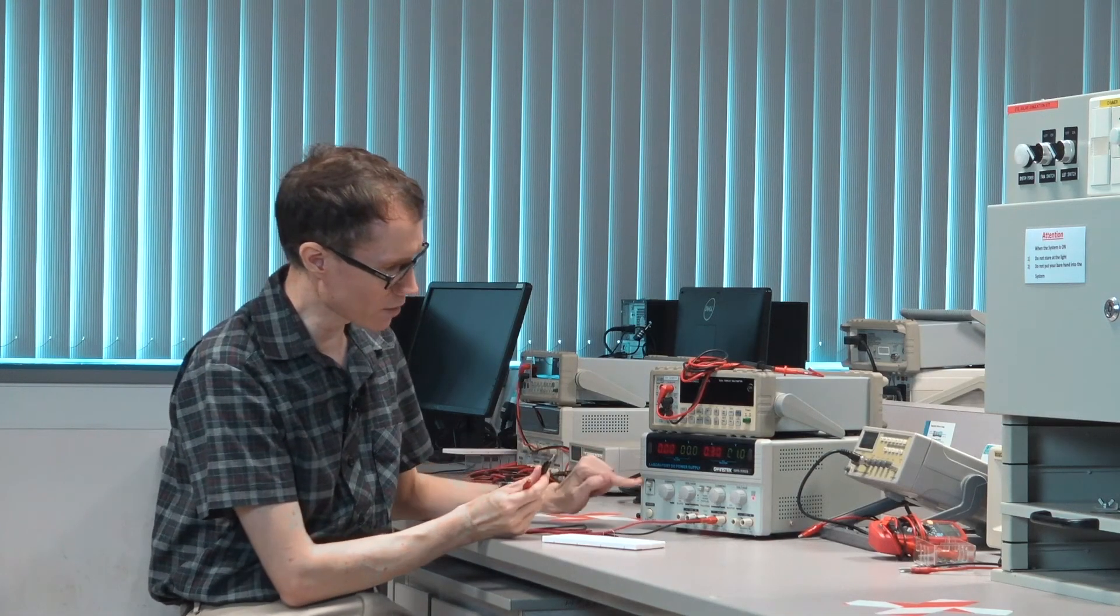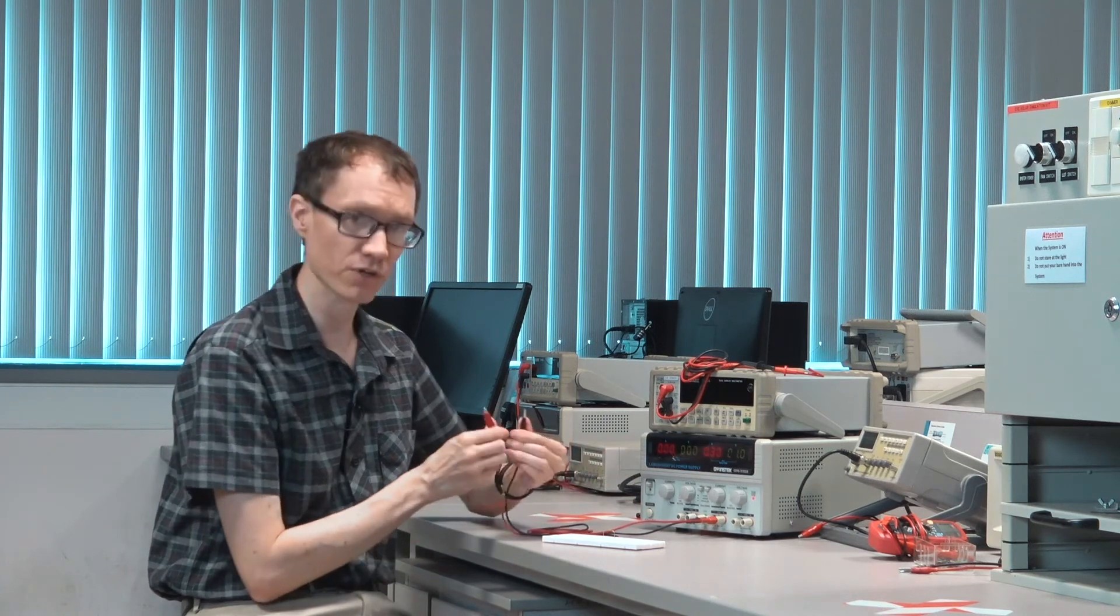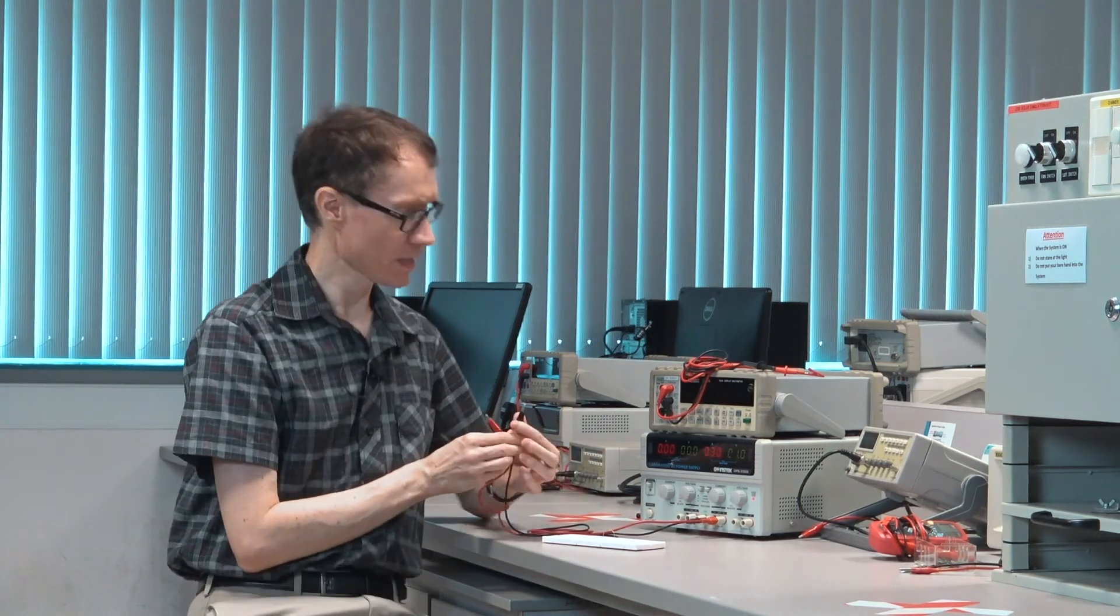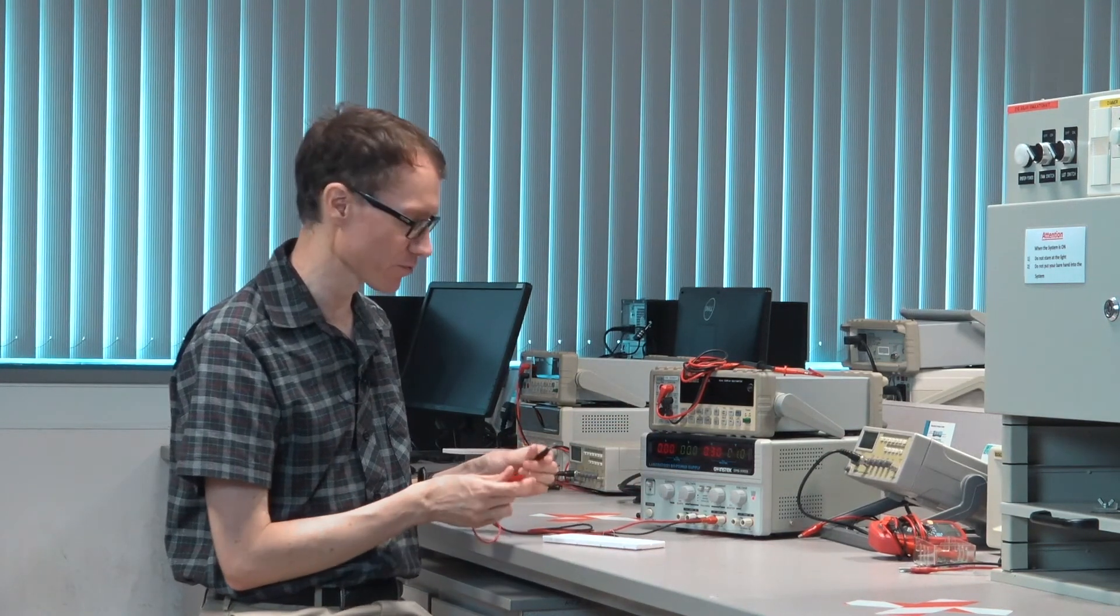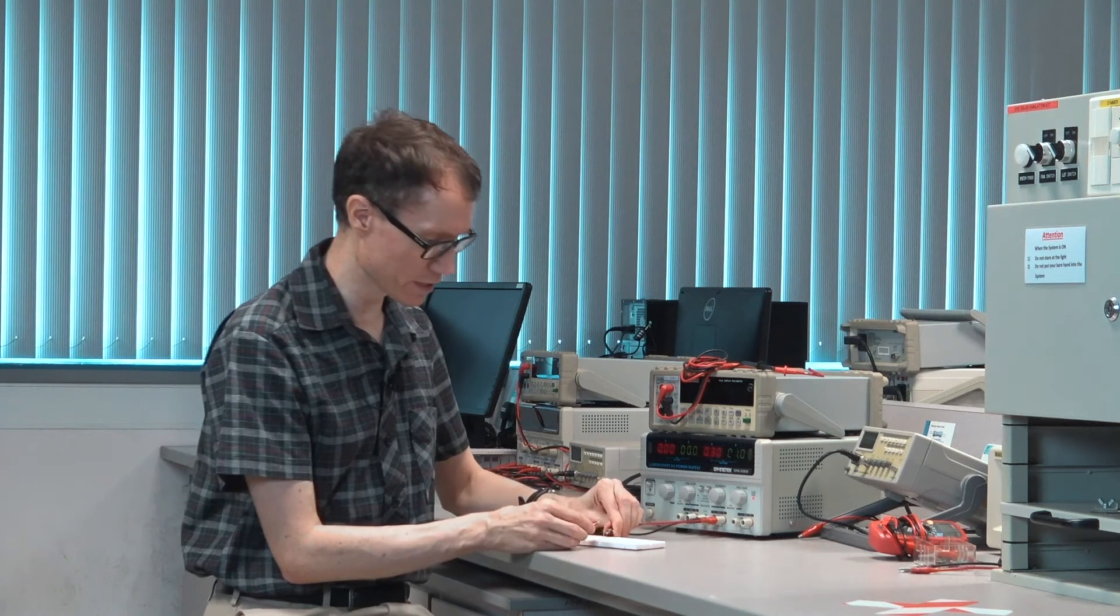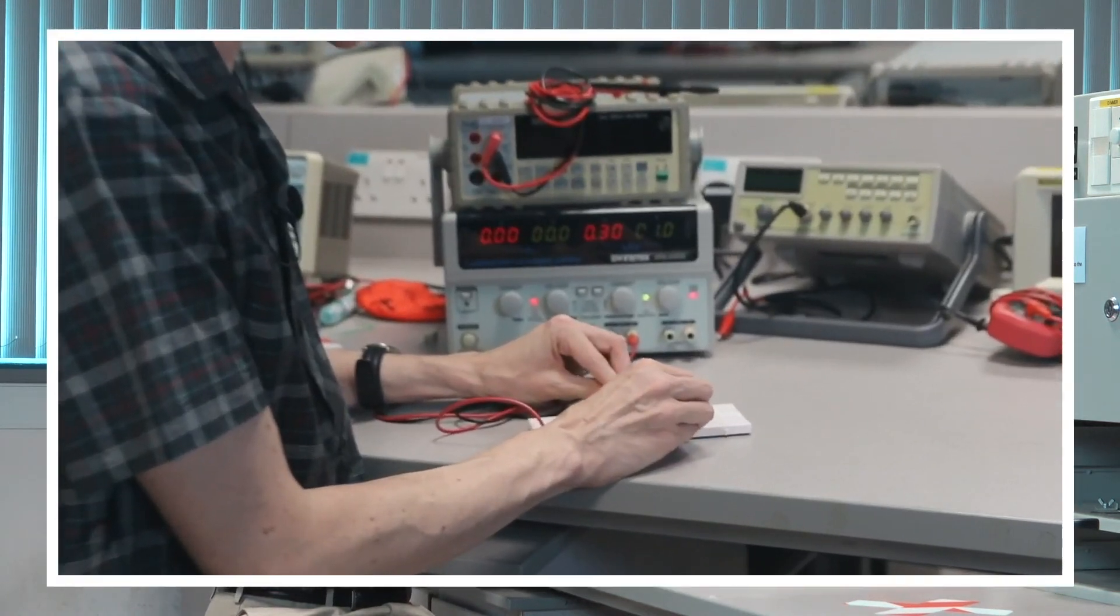This means that when I turn the output on, the laboratory power supply will put 1 volt across these two terminals and it would allow a maximum of 0.3 amperes to flow through the circuit. So I'll go ahead and hook it up to the resistor and this is a 10 ohm resistor.